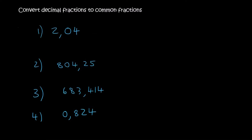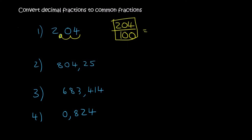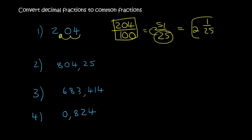Are you guys ready to practice? Let's do this. Here are four questions — you can pause the video and have a go yourself. For 2.04: we look at the decimal and see there are two decimal places, so we write it over 100, giving us 204 over 100. Typing that into the calculator simplifies it to 51 over 25. Since the top is larger, 25 fits into 50 twice with 1 left over, so the answer is 2 and 1 over 25.